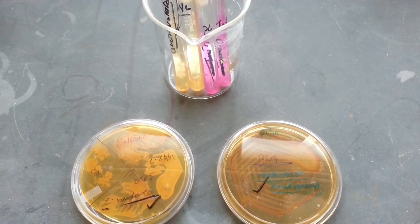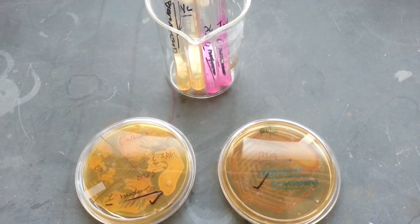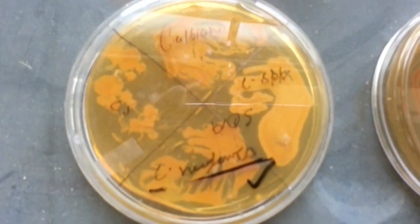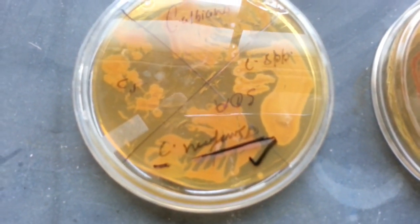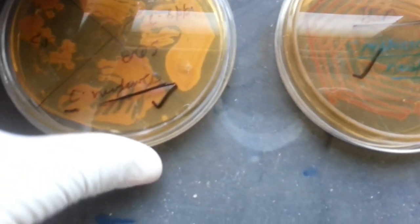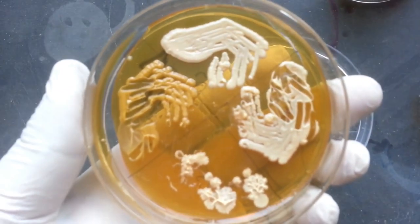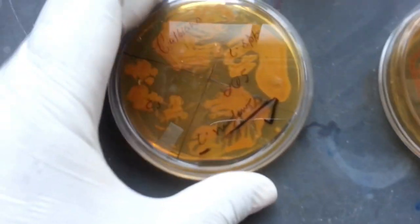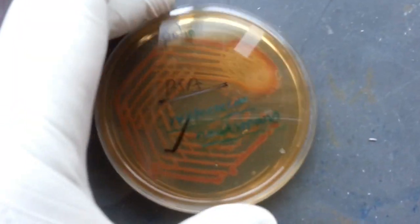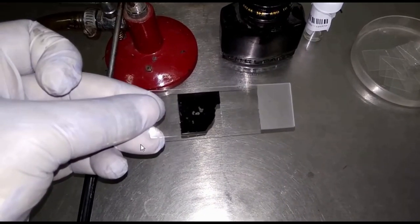Now about lab diagnosis. Collection of specimen: the specimen depends on the site of infection. In case of meningitis, we need CSF, whereas in case of pulmonary cryptococcosis, we need sputum. Similarly, other specimens may be pus or brain tissues.